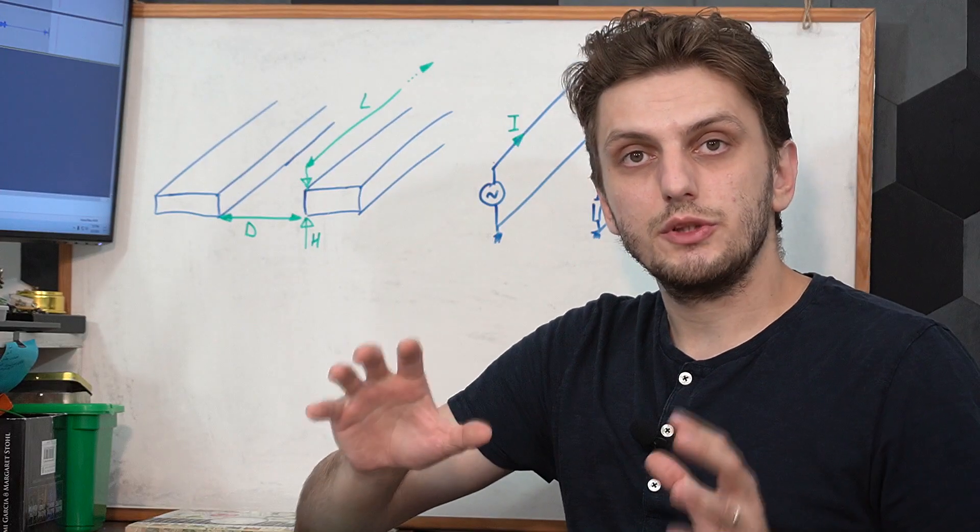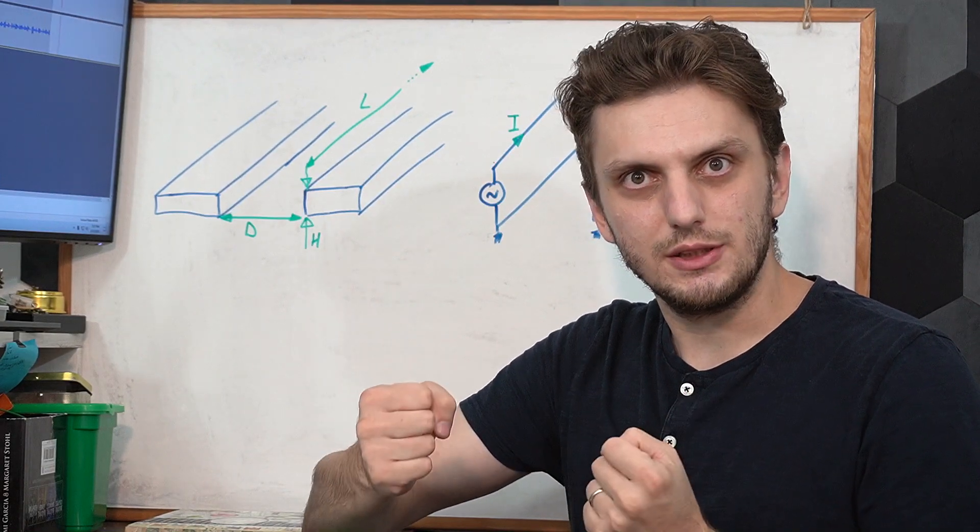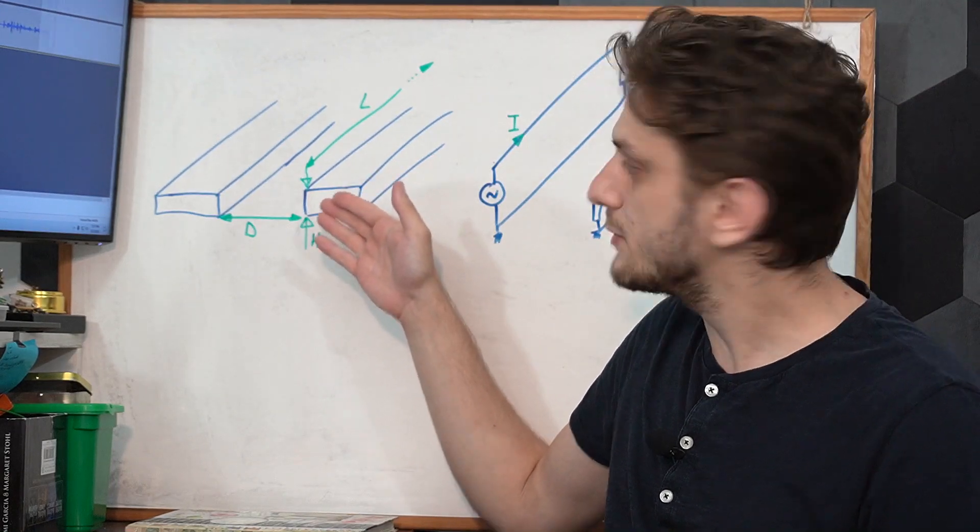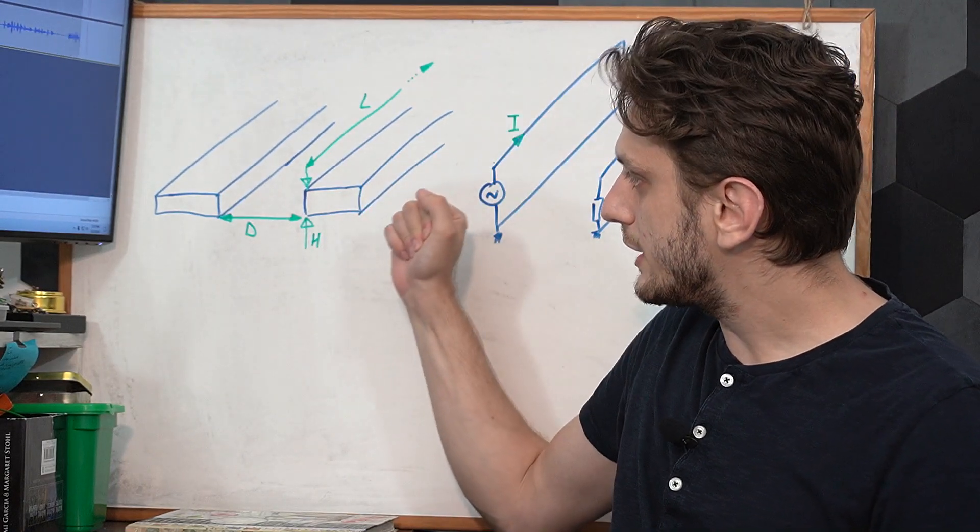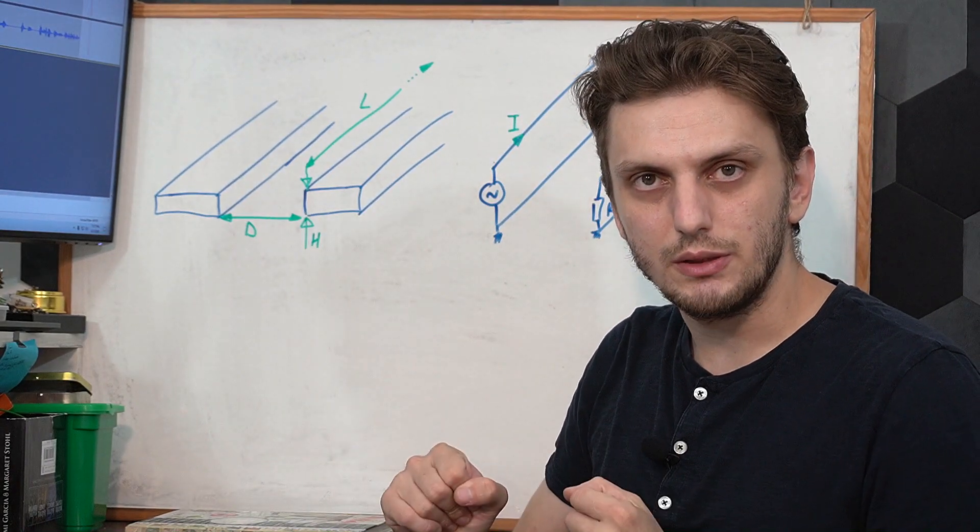So to understand what's going on, we need to look at the actual physical implementation of the two distant traces. So any copper trace on a PCB will have a certain thickness, and it will have a certain length, and two traces that are close by have a certain distance in between them.